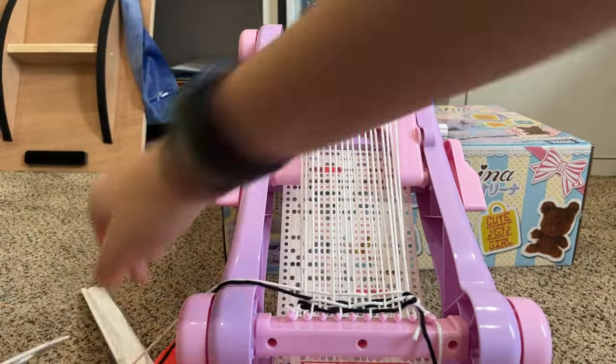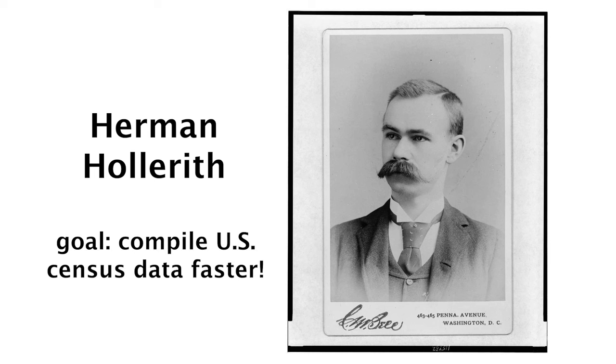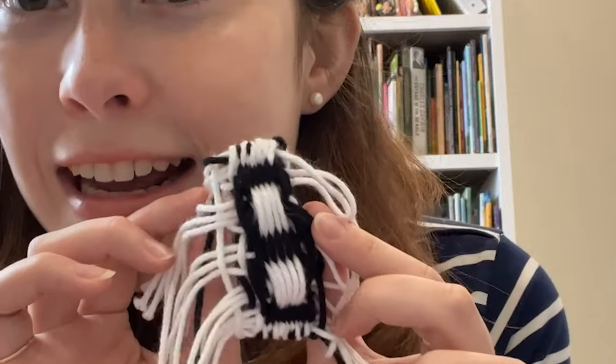The Jacquard loom also inspired an inventor at the end of the 19th century named Herman Hollerith. He was tasked with making U.S. census data compilation faster. The 1880 census took almost eight years to compile. Hollerith created a machine that read punch cards and compiled the data for the 1890 census in just one year. He formed a company called the Hollerith Tabulating Machine Company, which went on to become IBM. IBM still used punch cards in their computers until the 1970s and 80s — a technology that started in looms and evolved into modern computer programming.